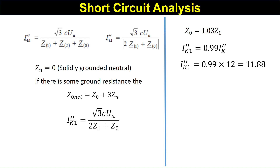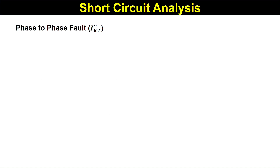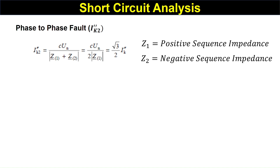Now we can calculate the line-to-line fault current, I_k2 double dash. I_k2 double dash equals c_un divided by Z1 plus Z2. Here the zero sequence impedance plays no role; only positive and negative sequence impedances are involved. Since Z1 equals Z2, it equals c_un divided by twice Z1, which becomes root three divided by two times I_k double dash. Putting in the value, I_k2 double dash equals root three divided by two times 12, which gives 10.39 kiloamperes.